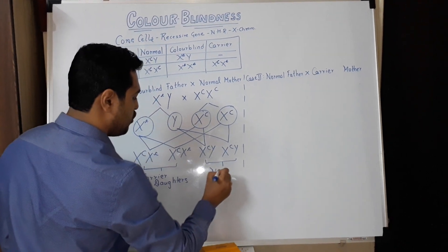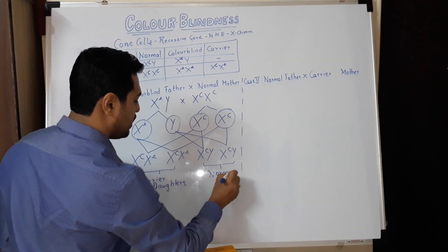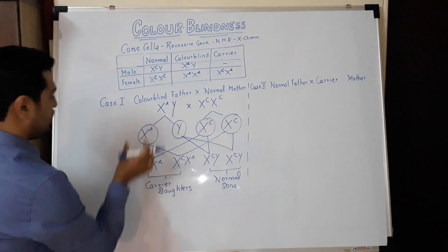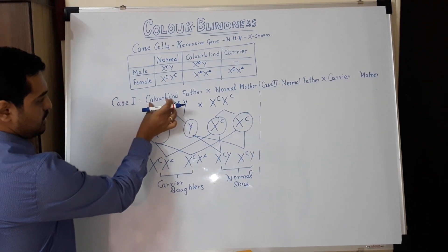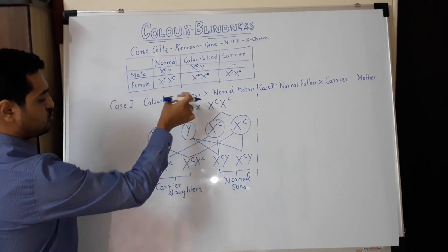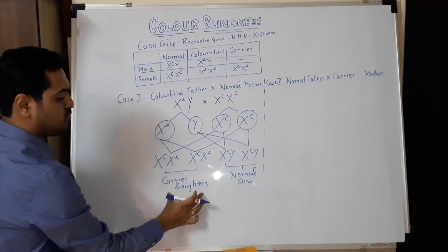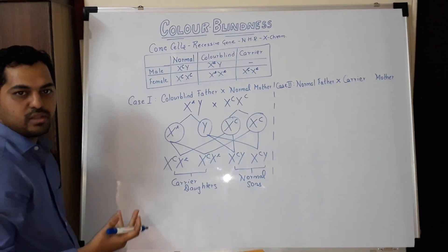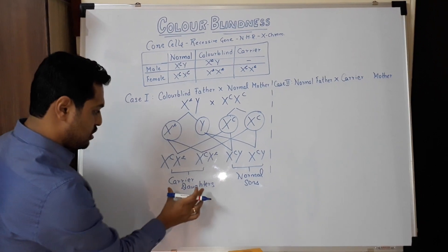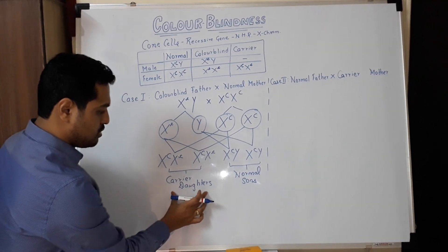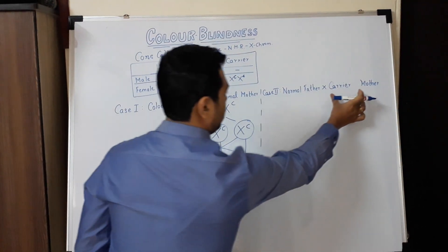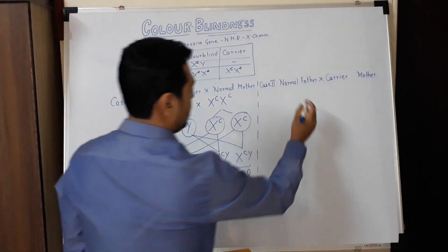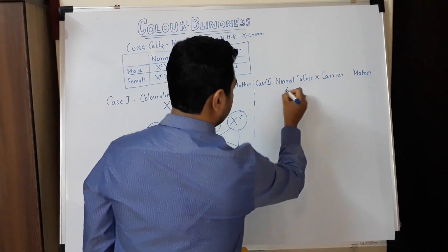The sons have the dominant gene, so they are normal sons. When the disorder is present in the father, it is transmitted to the daughters, but the daughters have normal vision because of the dominant gene received from the mother. In future, if this carrier daughter marries a normal person, we move to Case 2.